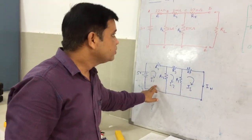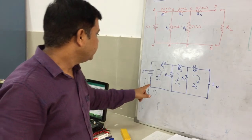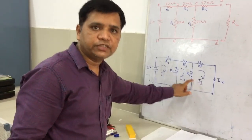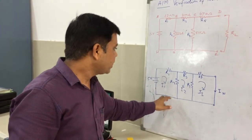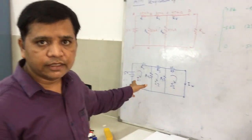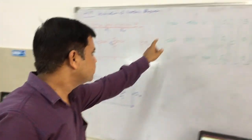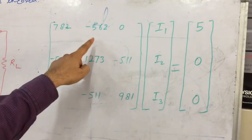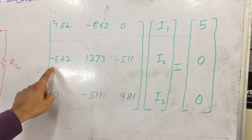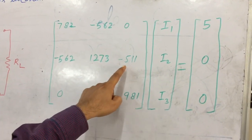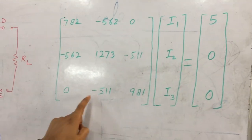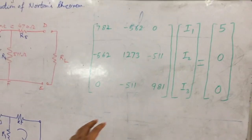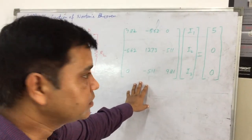We write the linear equations for meshes 1, 2, and 3. After writing these mesh equations — not going deep into the analysis — we obtain a coefficient matrix with values such as 782, -5, 6, 2, 0, -5, 6, 2, 1, 2, 7, 3, -5, 0, -5, and so on as the equivalent coefficient matrix.